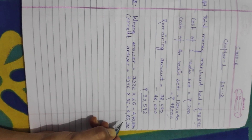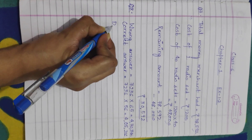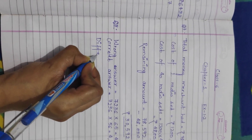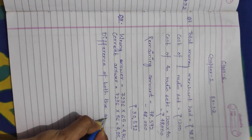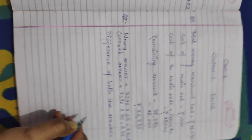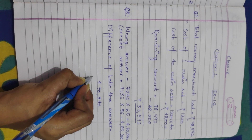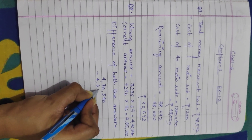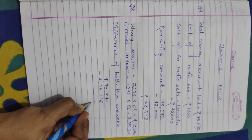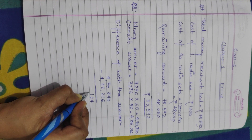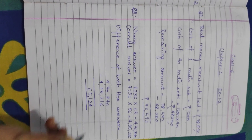They are asking by how much was his answer greater than the correct answer. We have to calculate the difference between the wrong answer and the correct answer. We will subtract: 4,70,340 minus 4,05,216. The difference between both answers is 65,124.